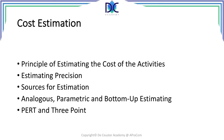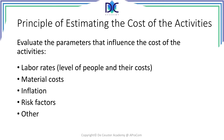Let's have a look at how we will estimate the cost of activities, what principles we use, what the precision is, what the sources for estimation are, different methods — analogous, parametric, and bottom-up estimating — and again we come back to our old friends PERT and three-point estimation. These are the principles of estimating the cost of activities.